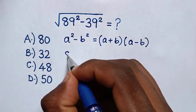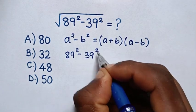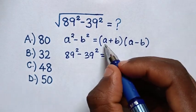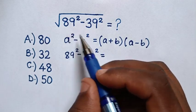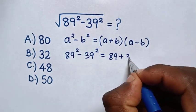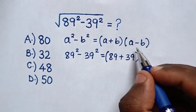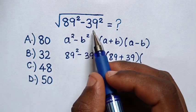From this expression, which is 89 square minus 39 square, it will be a plus b equals 89 plus 39, then bracket times a minus b equals 89 minus 39.